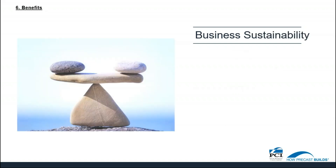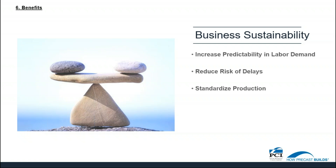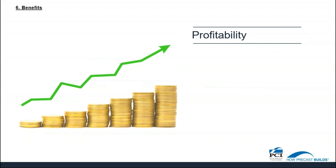Business sustainability is another benefit. Automation can make your business model more sustainable and more stable — increase predictability in labor demand, reduce the risk of delays, and standardize production. And where do these benefits lead? One thing: profitability. Automation can quite simply reduce costs, improve margins, and grow profit.